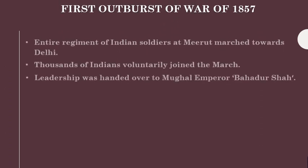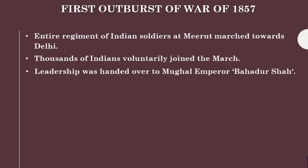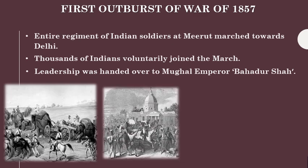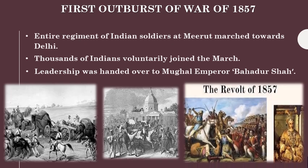The news about Mangal Pandey spread like fire. The entire regiment of Indian soldiers at Meerut took part in the freedom struggle and marched towards Delhi. Thousands of Indians voluntarily joined them on the way. They handed over the leadership of the freedom struggle to Mughal Emperor Bahadur Shah and proclaimed him as the Emperor of India. In the next part of the chapter, we shall study about the scope of the struggle and also about the causes of its failure.